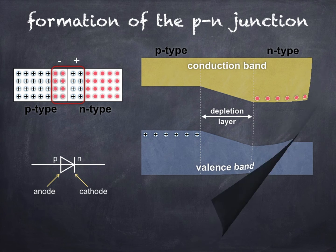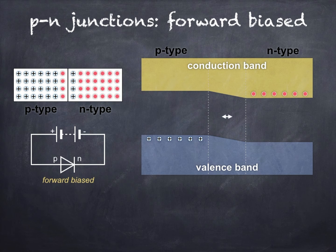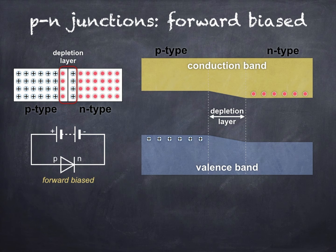Let's forward bias it then. To do that, we connect the negative terminal of a battery to the N-type side and the positive terminal to the P-type side. This has the effect of narrowing the depletion layer, and if the forward bias voltage is greater than the junction voltage, then the P-N junction will conduct. When looking at the energy band model, you'll notice that compared with the unbiased P-N junction, the slope in the depletion layer is reduced. This makes it easier for electrons to flow from N-type to P-type across the barrier, and similarly for holes to flow from P-type to N-type.